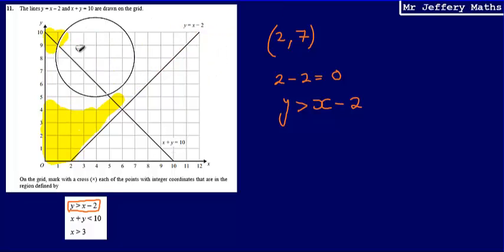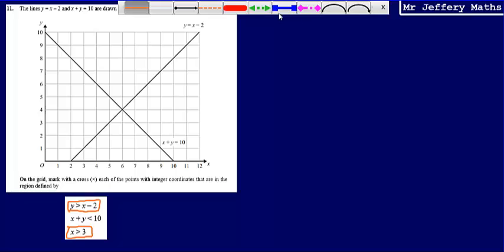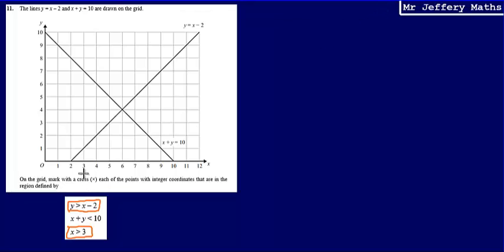To work this out in full, what we're going to need to do is we're also going to need to draw on this grid the line x is equal to 3. So, drawing this onto our grid, x is equal to 3 is simply a straight line that goes through the x coordinate at 3.